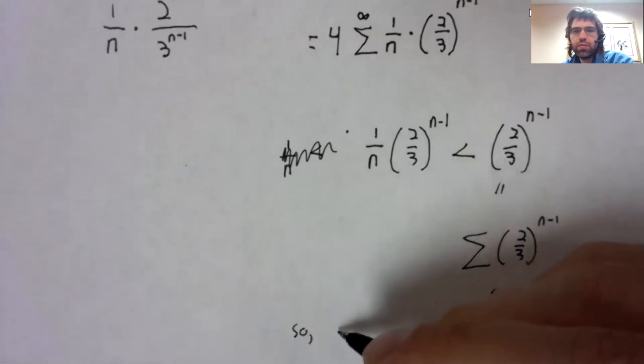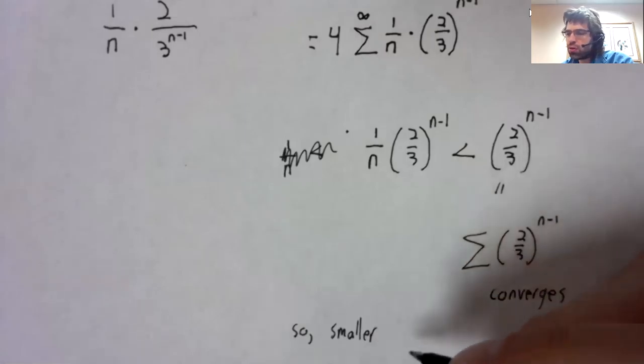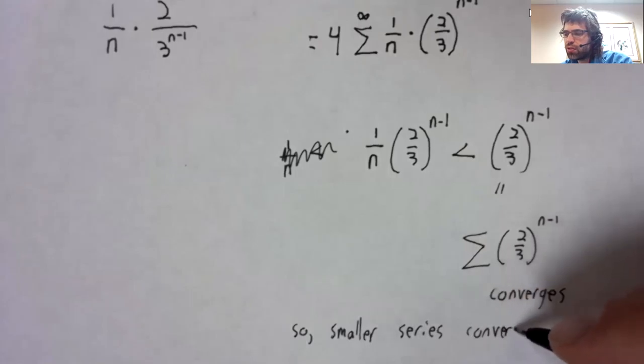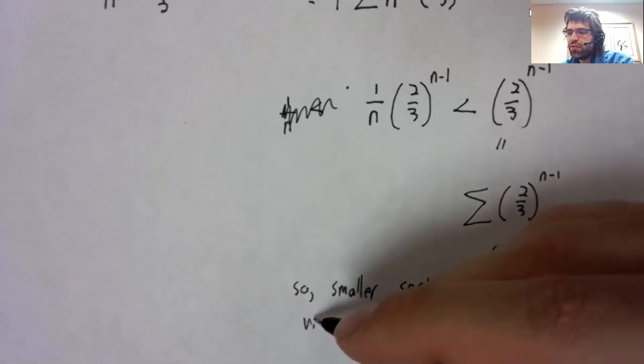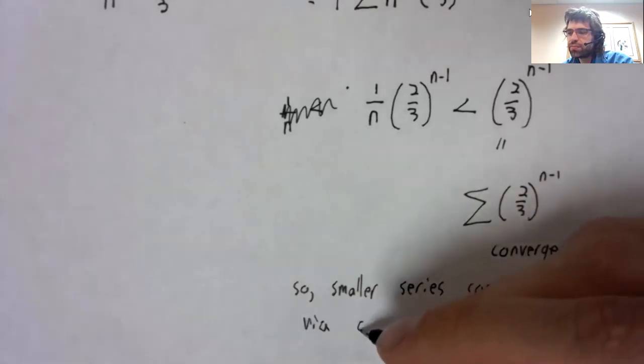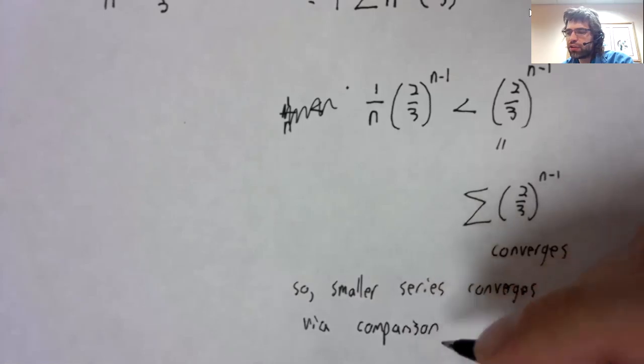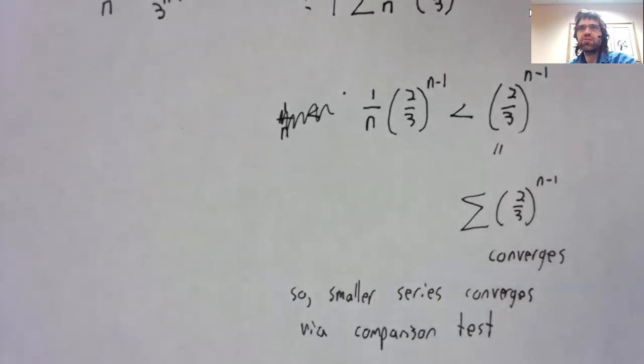So the smaller series converges via the comparison test.